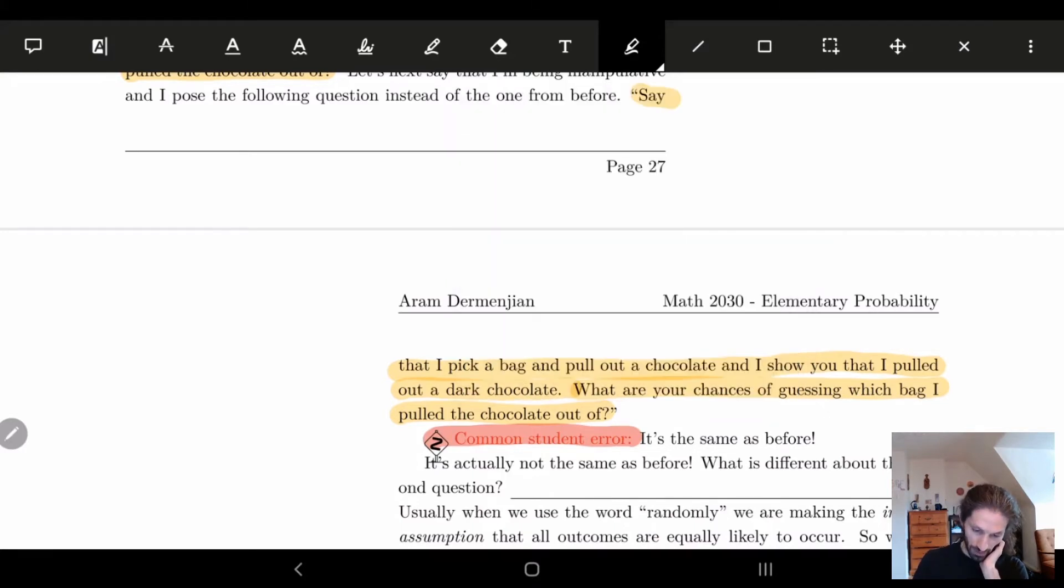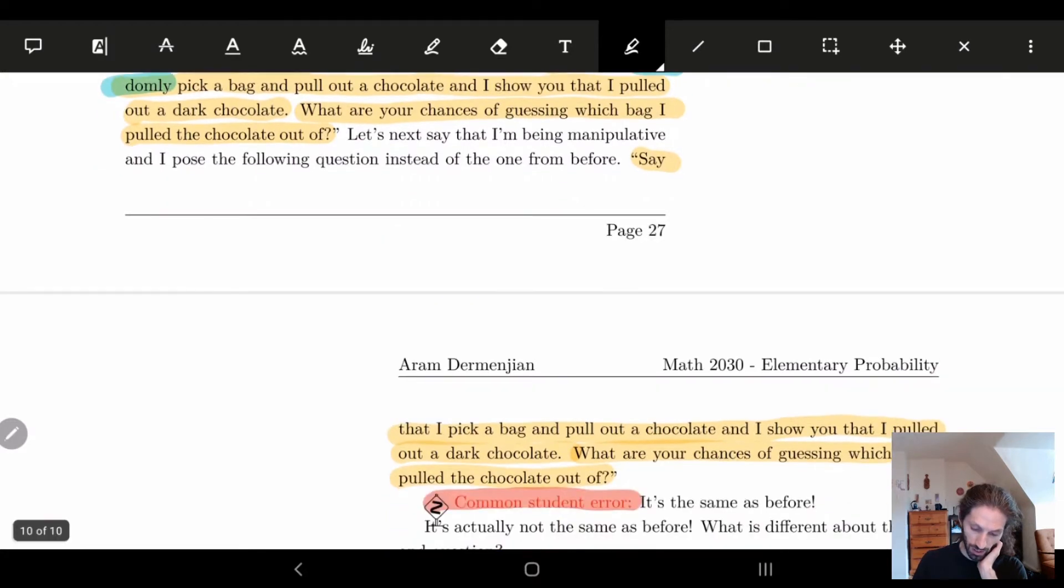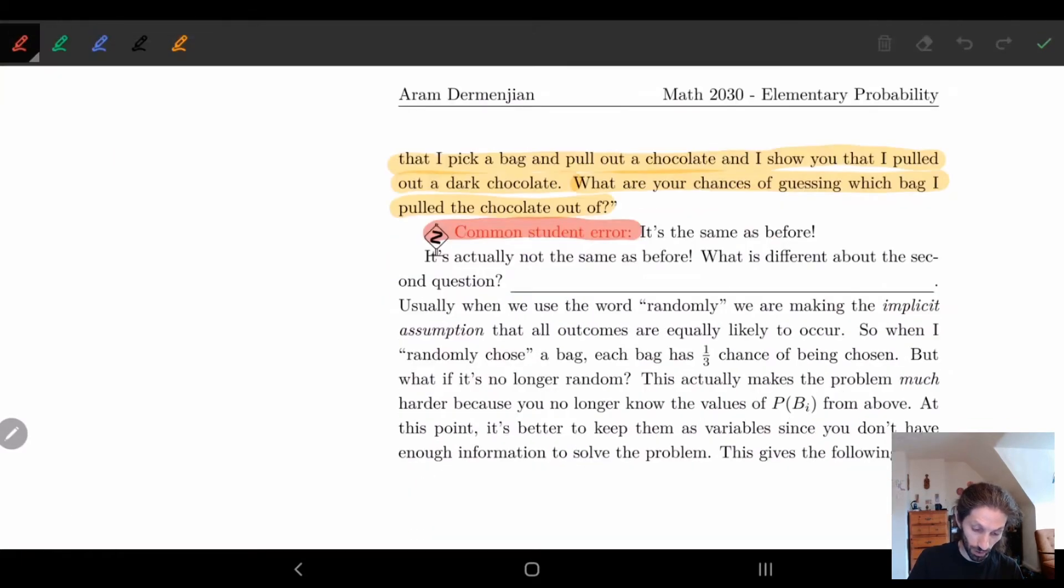I'll do this in blue and it's actually in the fourth word. So here I say 'say that I randomly pick a bag,' but here I don't. Here I say 'say that I pick a bag,' and what this means is if I'm not saying randomly, that means that I'm not, I don't randomly pick a bag.